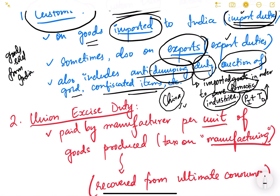Regarding auction of gold — gold which is smuggled into our country is auctioned, and that also becomes part of the custom duties. Confiscated items: many times some imports are banned, items are confiscated by the customs department because proper records or bills are not maintained. Those items are then auctioned. All these form part of the custom duties in the annual financial statement of our country.